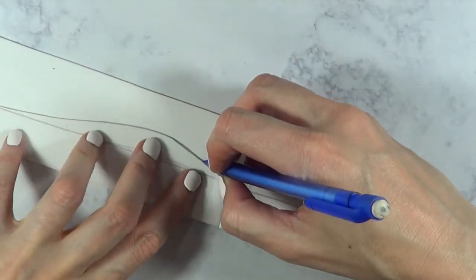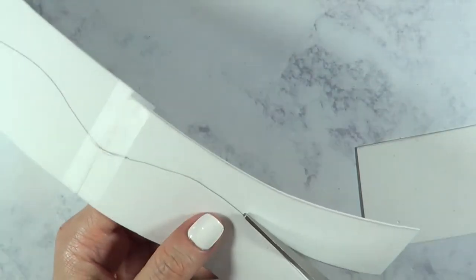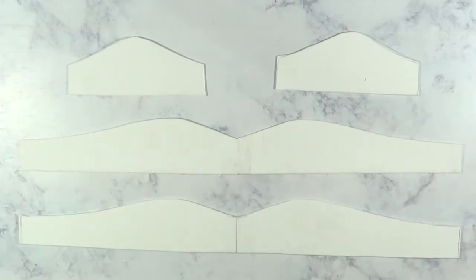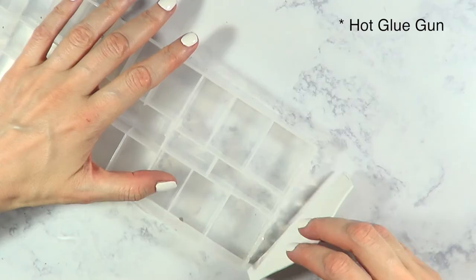And I'm just going to trace those shapes into the other foamy papers that I have. Got to cut the whole thing. Then this is what I have: two big ones and two small ones.